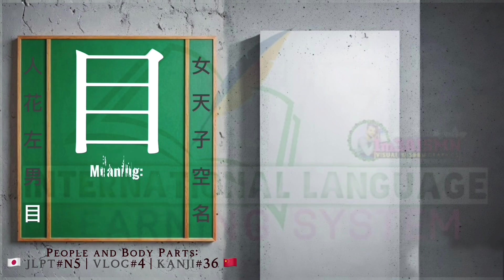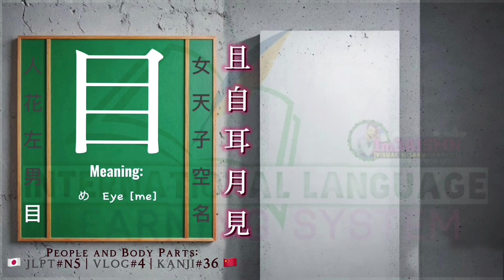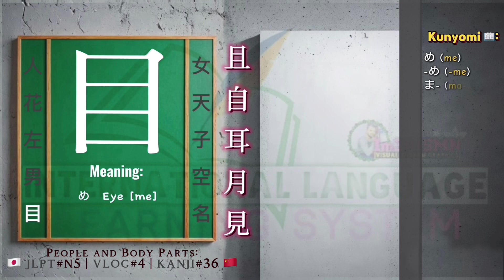This kanji means me, I. Kan, me. Similar kanji types of this kanji. Kunyomi reading of this kanji: me, me, ma.